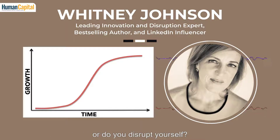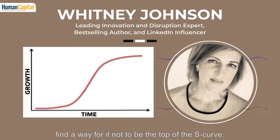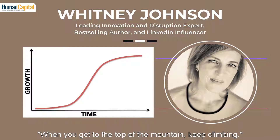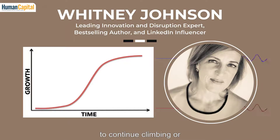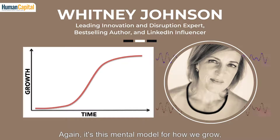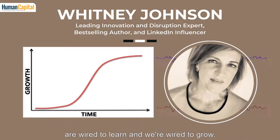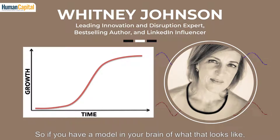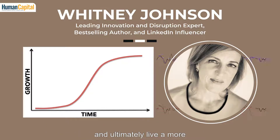You've got this dilemma: do you wait to be disrupted, or do you disrupt yourself? I advocate that when you get to the top of the S-curve, you have two choices. One: find a way for it not to be the top — there's a Zen saying, 'when you get to the top of the mountain, keep climbing,' so that top becomes just a plateau. Or two: find a new curve to jump to. You learn, you leap, and you repeat. Foundational to all of this is that we as human beings are wired to learn and grow. If you have a model in your brain of what that looks like, you'll be able to do it more effectively, more efficiently, and ultimately live a more purpose-filled, happy life.